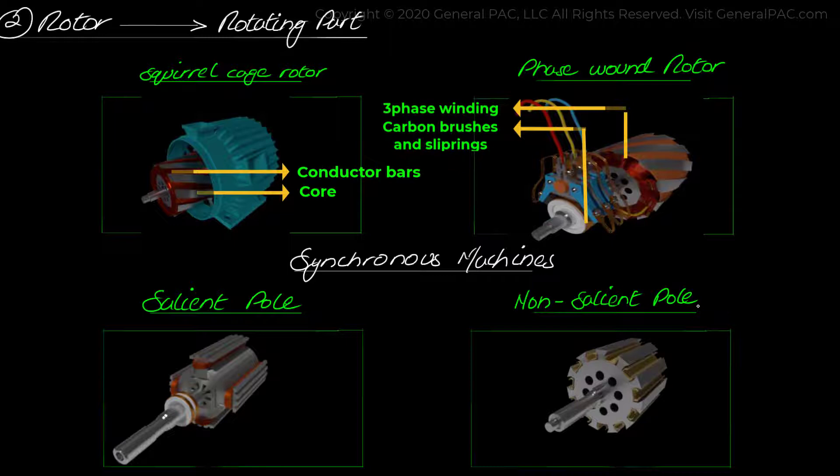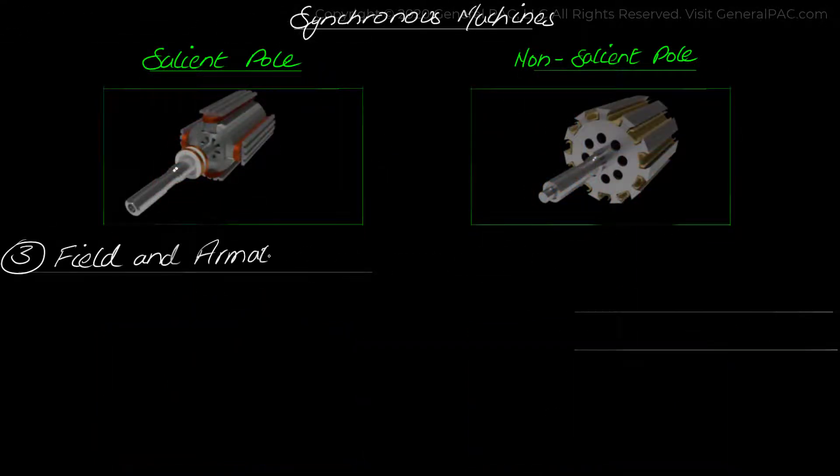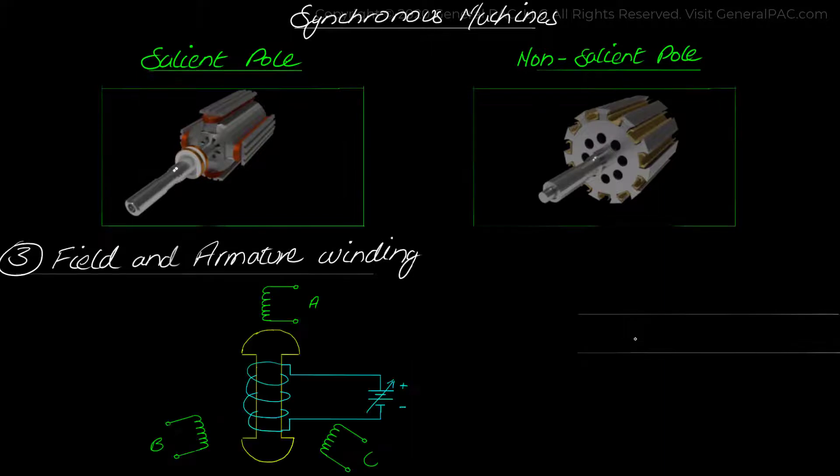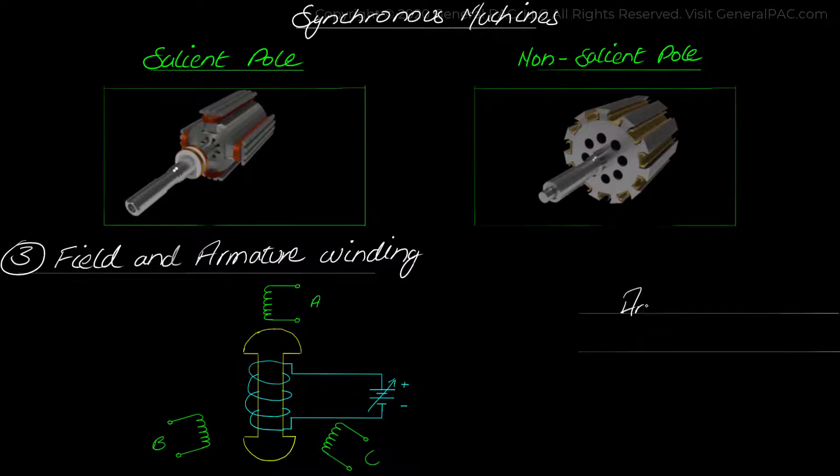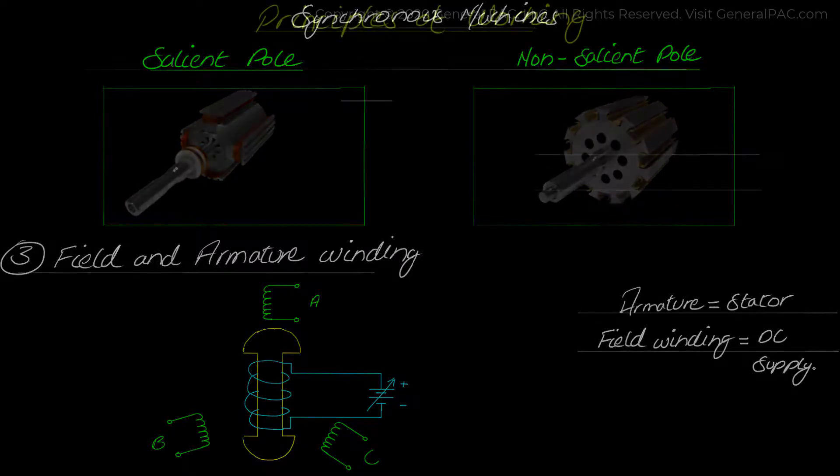Now let's move on to the next area of construction and talk about the field and armature winding. The concept of armature and field is related only to synchronous machines. The armature is the AC winding in the stator, while the field winding is the constant DC supply provided at the rotor.